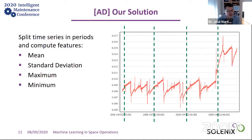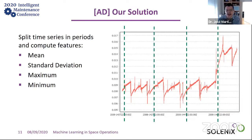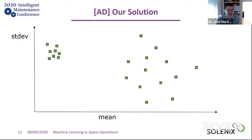After trying many things, we found that a very simple approach works well. For each time series, we divide it into time periods and compute simple statistical measures — mean, standard deviation, maximum, minimum. We use one-day periods because statistics become more stable and there's a natural operational cycle. For illustration with just two dimensions — standard deviation and mean — you can have clusters of points from nominal periods.